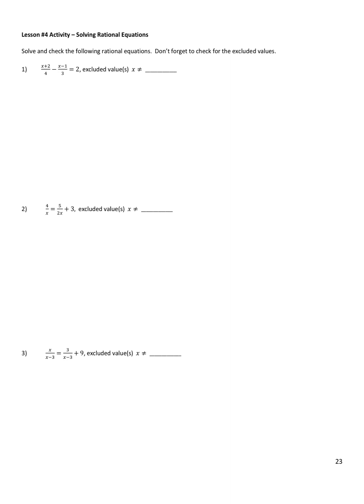This first one has no excluded values because there are no x's in denominators. I'm going to try to clear this fraction by multiplying both sides by 12. 12 would be the common denominator between 4 and 3.